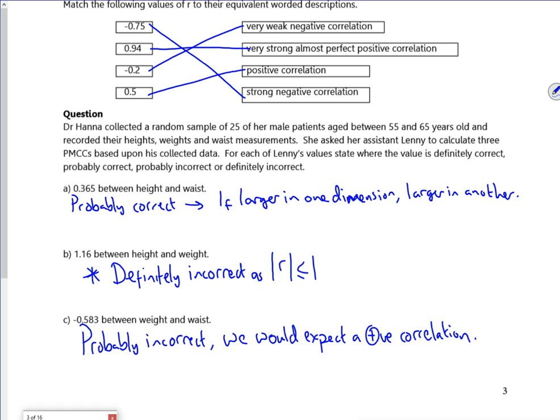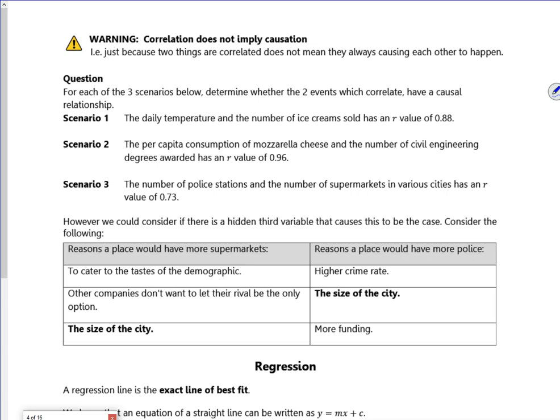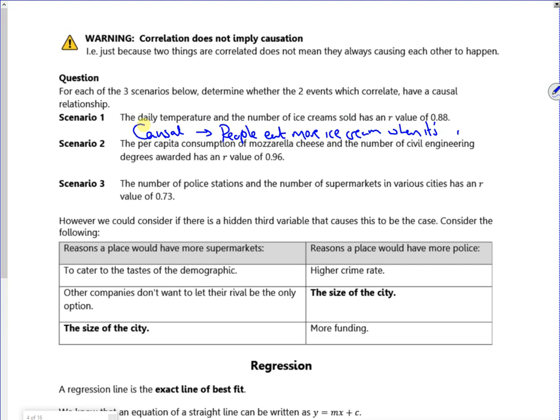So correlation and causation. So we've got three scenarios. So the daily temperature and the number of ice creams sold has a value of 0.88. So warmer weather will cause people to have ice creams. Makes sense. So that's causal. So we're okay with that. You can see that one, can't you?